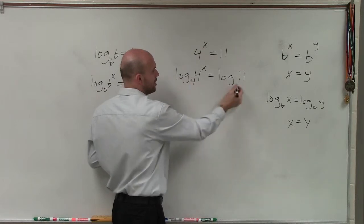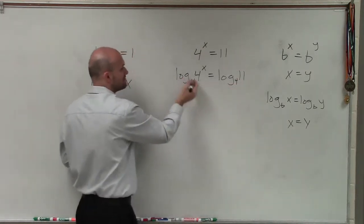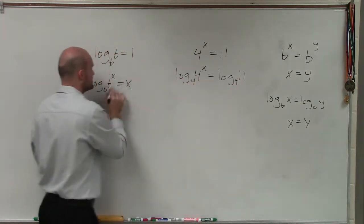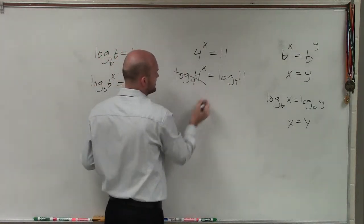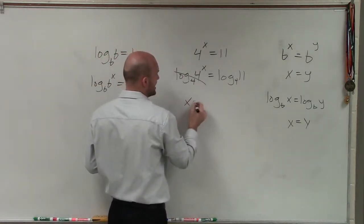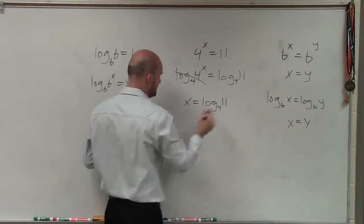I want to get rid of these logarithms. So if I take log base 4 of 4, I know that's just going to equal my exponent. So therefore, this now just goes to 1. I'm just left with x equals log base 4 of 11.